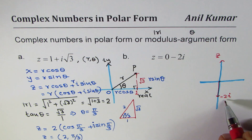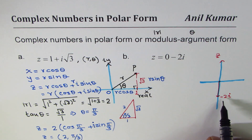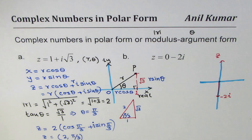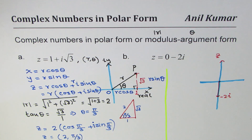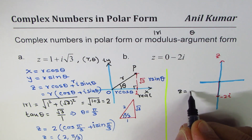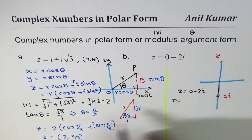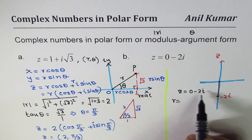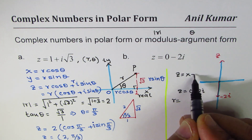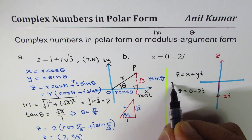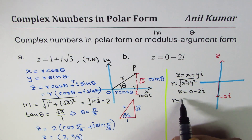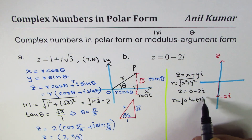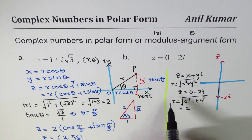From the diagram the magnitude is clearly 2. Using the standard formula, z = x + yi, so r = √(x² + y²). Here x = 0 and y = −2, giving r = √(0² + (−2)²) = √4 = 2. So the modulus r is 2.